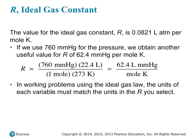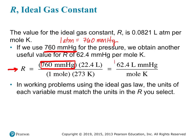There are other values for the ideal gas constant. For instance, 1 atmosphere equals 760 millimeters of mercury. If we plug in 760 mmHg instead of 1 atmosphere, we get a different value: 62.4 liters times millimeters of mercury over moles times kelvin. So there are other values of R you can use, but we'll most often use 0.0821.